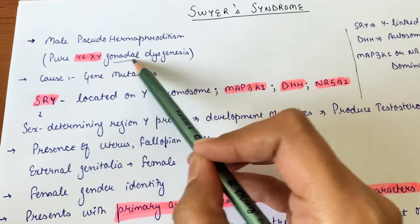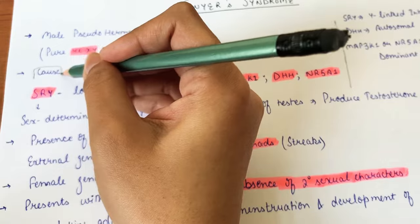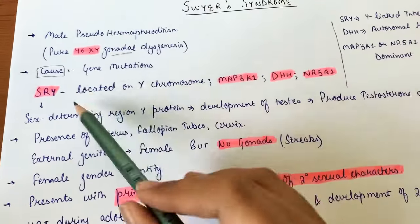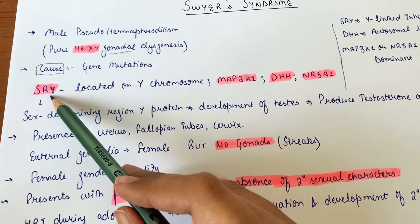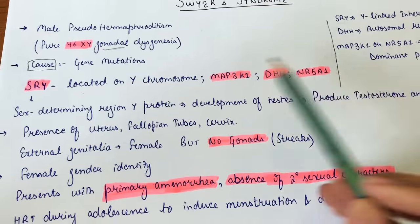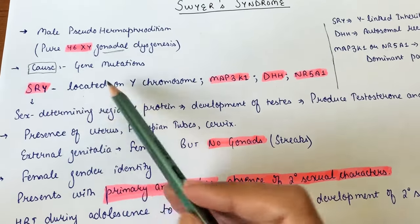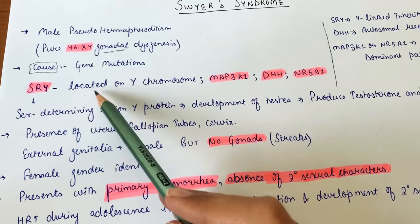The gonads are not formed in this syndrome. The cause is gene mutations, though what triggers these mutations is unknown. The main genes associated are SRY, MAP3K1, DHH, and NR5A1. The most important mutation is in the SRY gene.